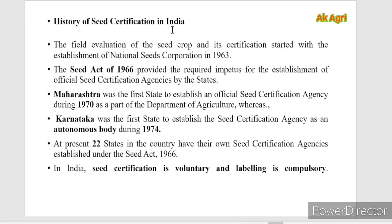Let us see the history of seed certification in India. Seed certification was established in Sweden for the first time. In India, under the Seed Act of 1966, it provided the required impetus for the establishment of official seed certification agencies by the states. Maharashtra was the first state to establish an official seed certification agency in 1970, as part of the Department of Agriculture. Karnataka was the first state to establish the seed certification agency as an autonomous body during 1974. At present there are 22 states that have their own seed certification agency established under the Seed Act 1966.